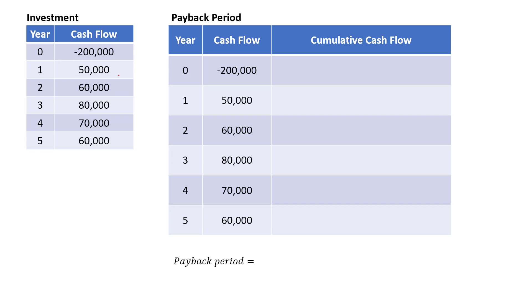What we need to do is calculate the cumulative cash flow. To do that, we will sum up the cash flows for every year. At time zero, the cumulative cash flow is just negative $200,000.